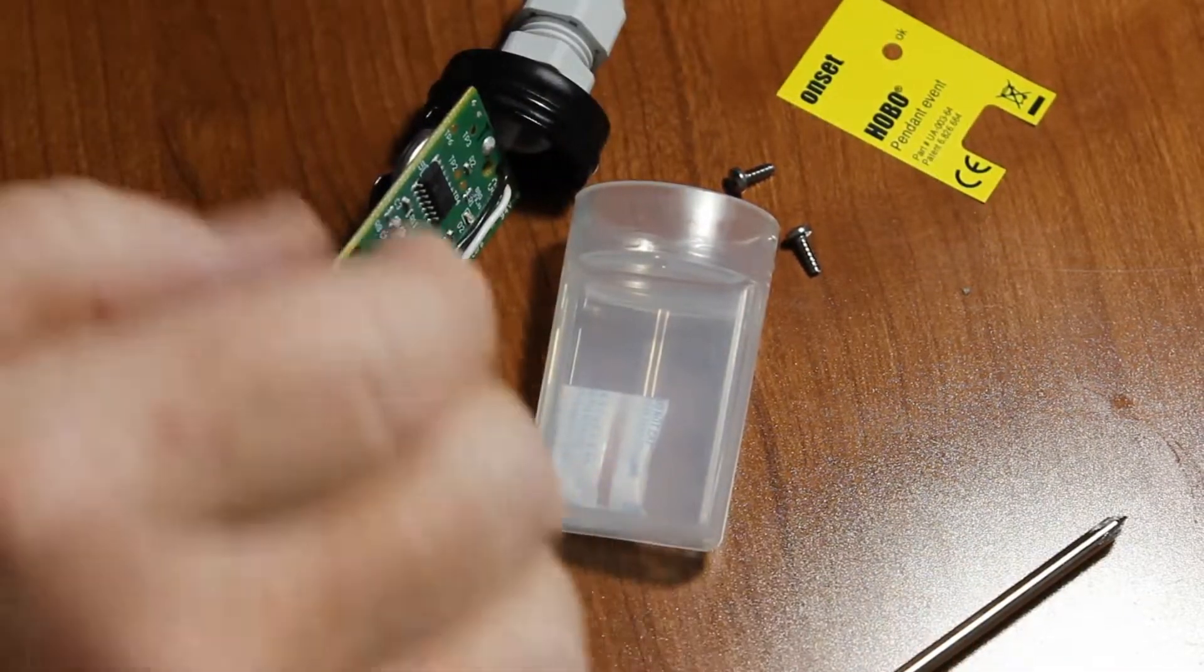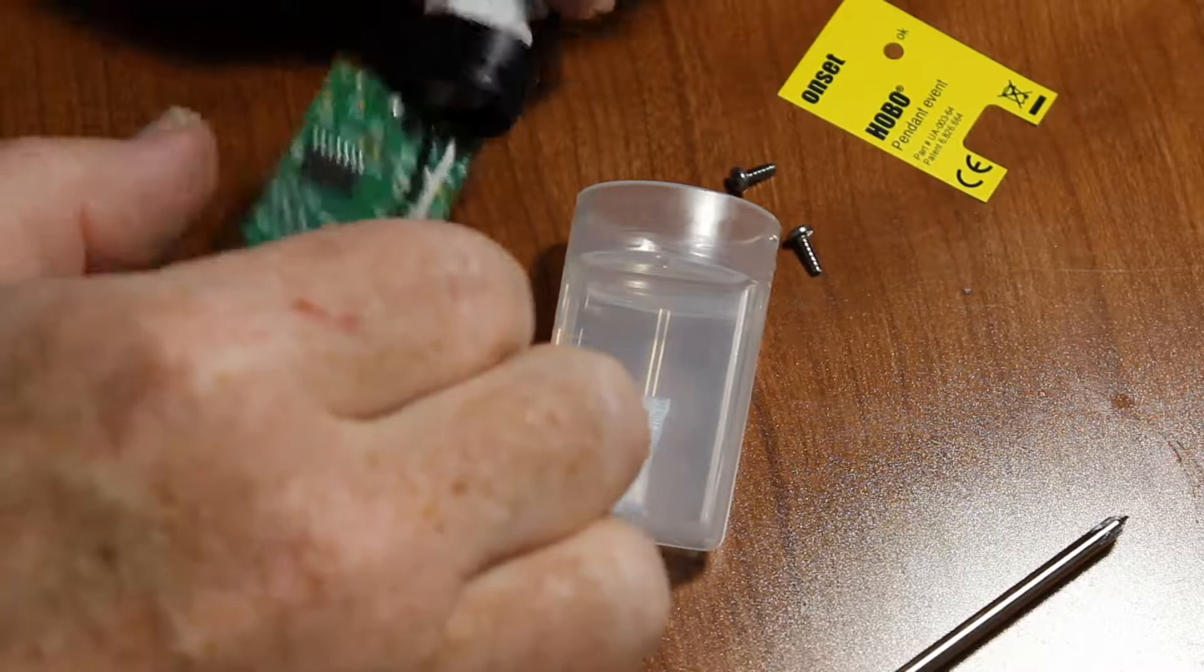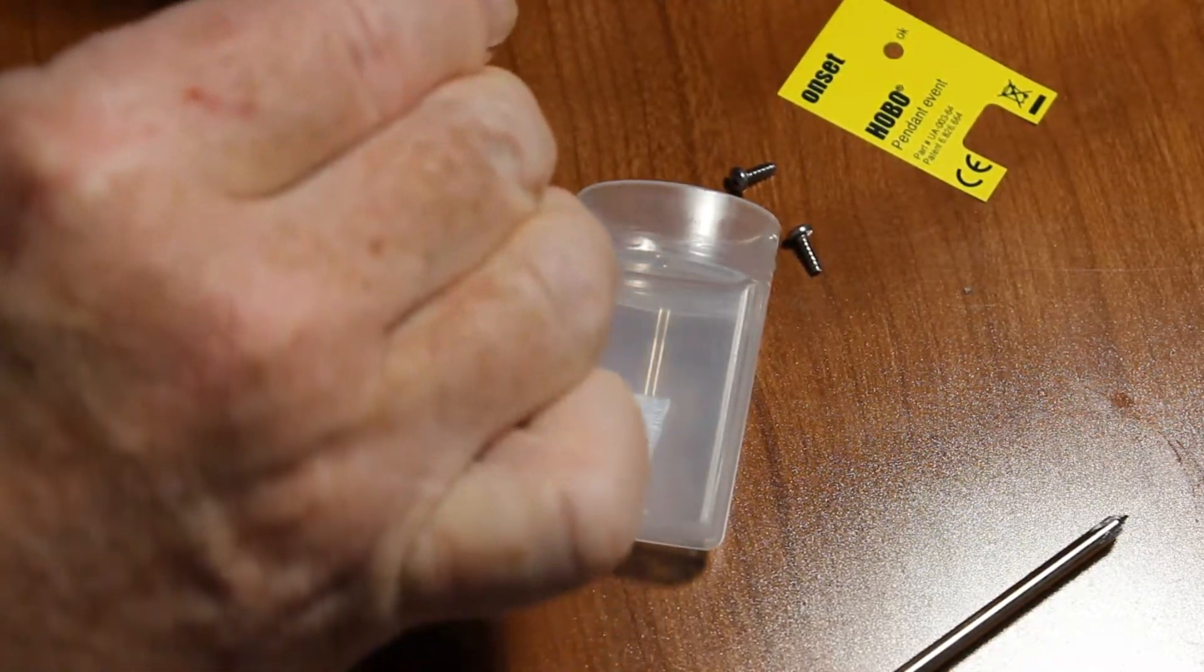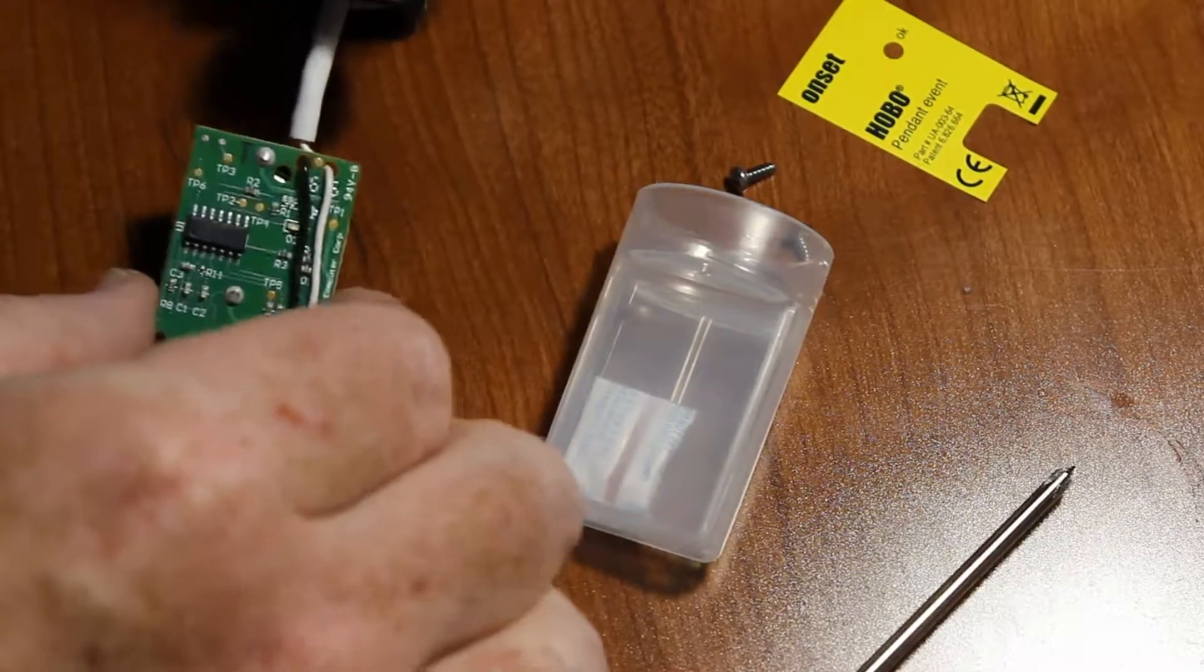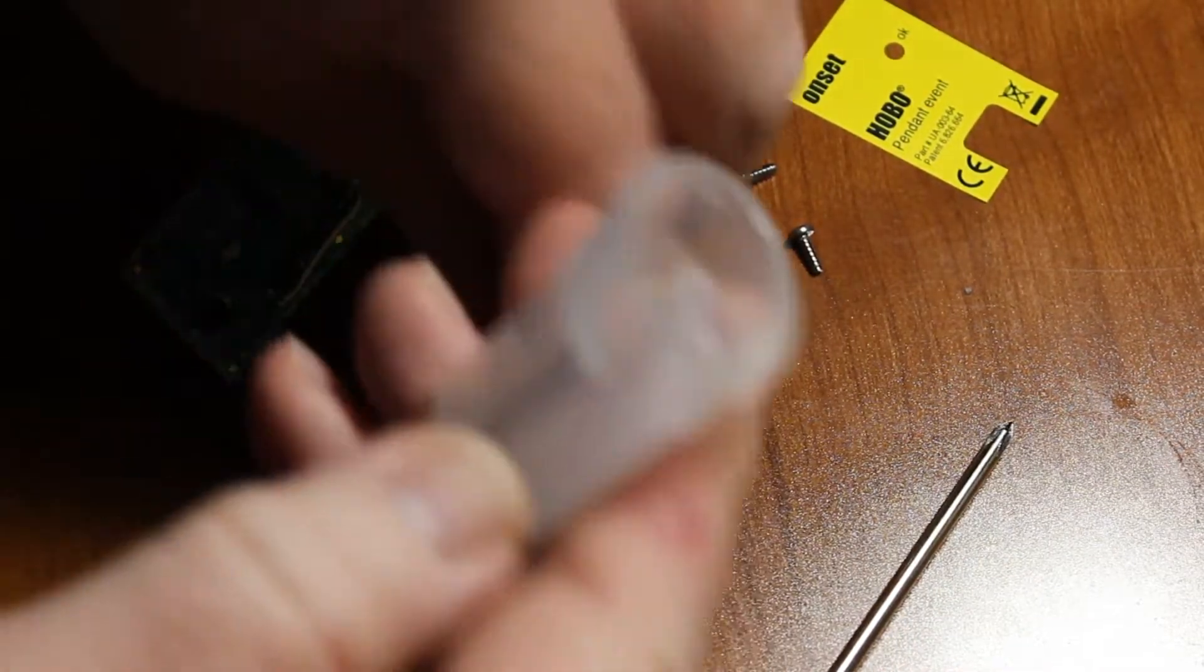Once we have the battery replaced, we want to get this back into the case. So what I like to do is loosen this grommet and push the cable out a little bit, so I have a little bit of room to work. So see, I extended that a little bit.